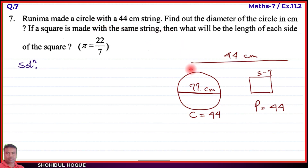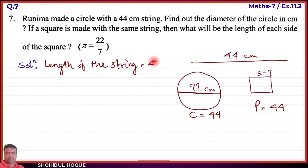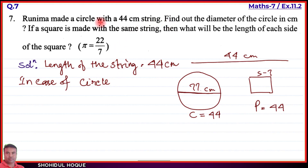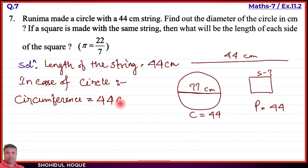The circumference of the circle equals the perimeter of the square, both equal to the length of the string. Length of the string equals 44 centimeters. In case of the circle, the circumference equals 44 centimeters.